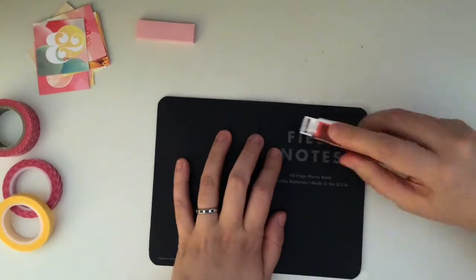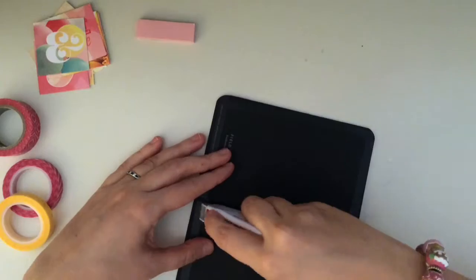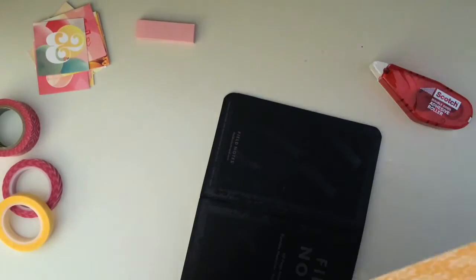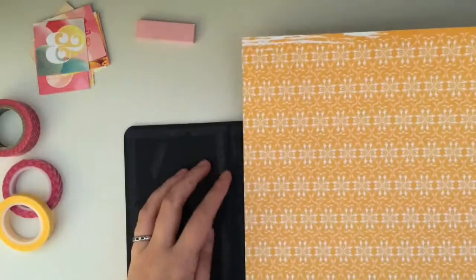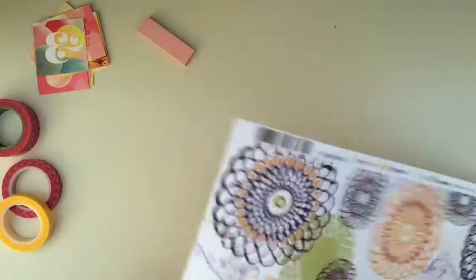First, I want to cover my journal because I'm not really into this black. So I'm going to use scrapbook paper. I put the adhesive all over the cover of the journal, and then I have this scrapbook paper, which is a nice yellow, great with my branding, and I just smush it down and then I cut off the excess.